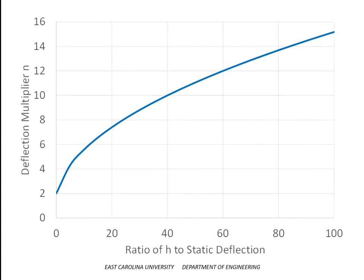And, if you plot that multiplier up against that ratio, H over the static deflection, you get a curve that looks like this. Now, one of the interesting things about this is that if that ratio is zero, in other words, we're not really dropping it, but we're just applying it all at once instead of applying it slowly over time, you can see over at the far left-hand side of this curve that there is a multiplier of two.